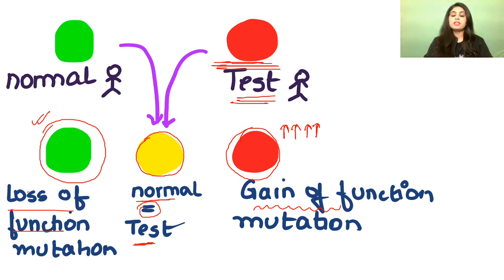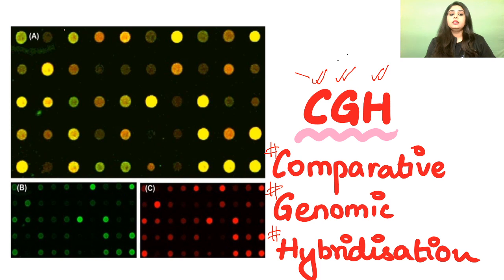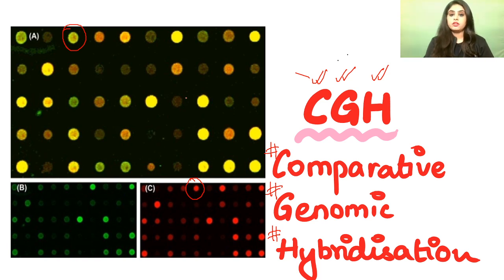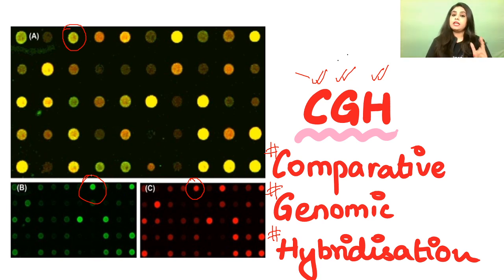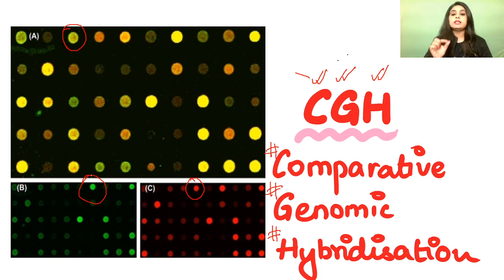Looking at the diagram: yellow is when red and green mix equally — both people are normal. Red colour means the tested person has a gain of function mutation. Green colour means a loss of function mutation. So notice: first, we use two colour codes — red and green. Second, we test for both gain and loss of function. Third, we were not targeting any specific locus.